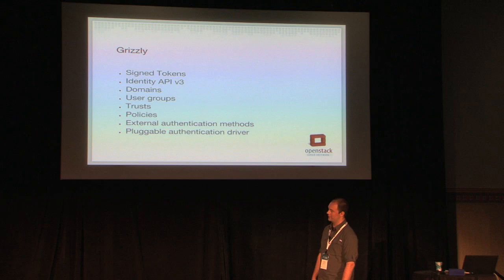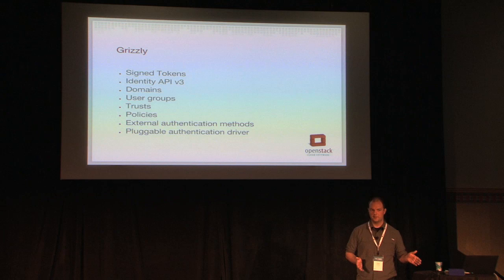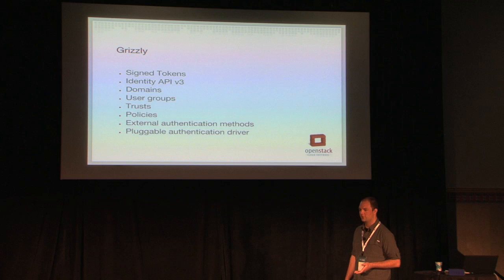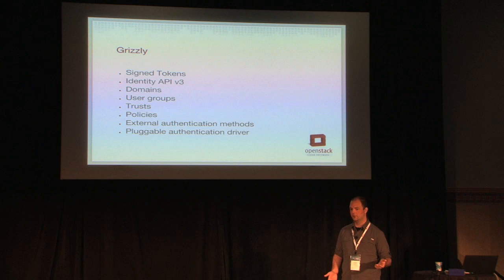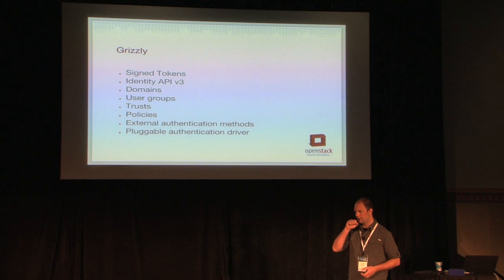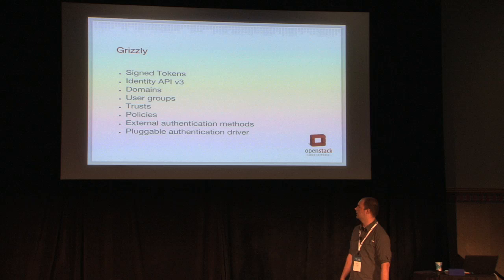One of the other big focuses in Grizzly, based on a lot of use cases, is external authentication mechanisms. Keystone from the start has always been intended to be very pluggable. One deployment scenario we see a lot is running Keystone behind something like Apache for load balancing or TLS termination. Apache can also do HTTP digest authentication. To allow Keystone to consume that type of authentication, Apache will pass down a remote user environment variable and Keystone can implicitly trust that and authenticate the user as whatever Apache says they were. Apache is just one use case for that feature.